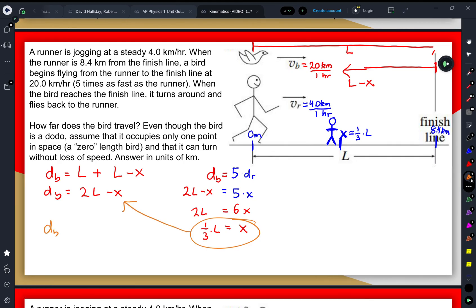The total distance of the bird would then be two times the total length traveled minus one third of the length, which is the position of that runner when these two meet again. That means the total distance of the bird would be 2L minus one third L, or five thirds times the total length.